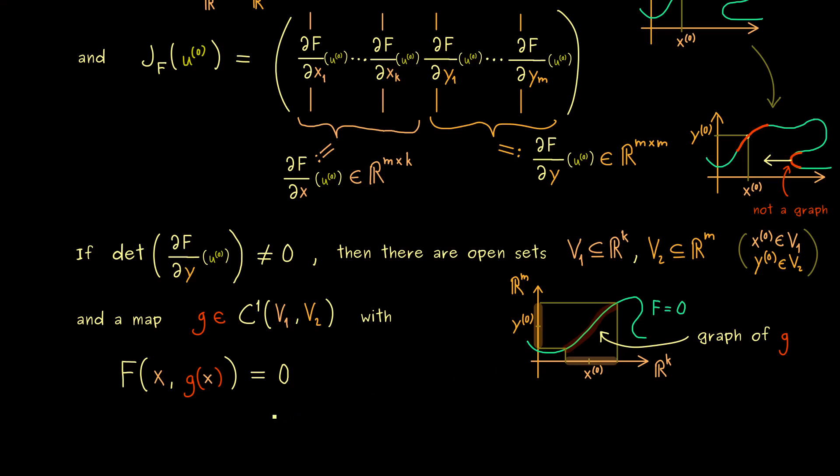And please don't forget, it's the zero vector in R^m. So in other words, we actually have m equations in one. And now the claim is, that all of them are satisfied for all x in V_1. And this is the implicit function theorem.